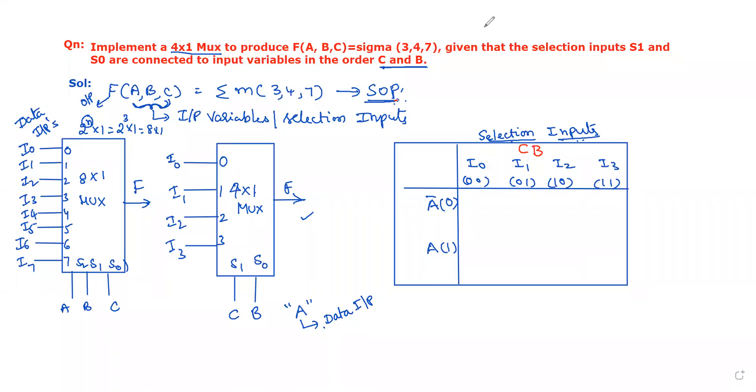Hello, guys. In this video, we will discuss a problem related to the multiplexer. The question is: implement a 4 by 1 MUX to produce f(A,B,C) = Σ(3,4,7), given that the selection inputs S1 and S0 are connected to input variables in the order C and B.